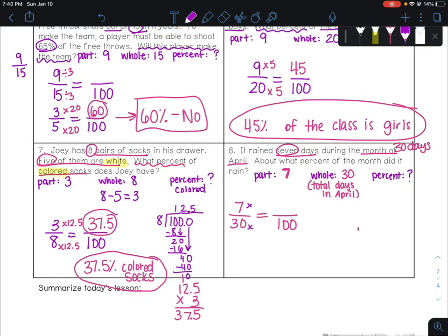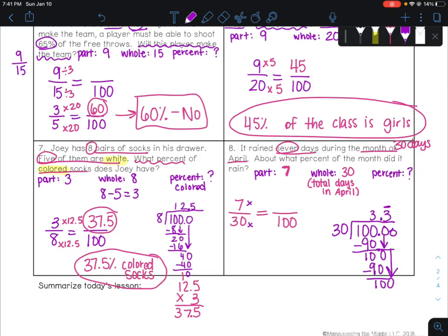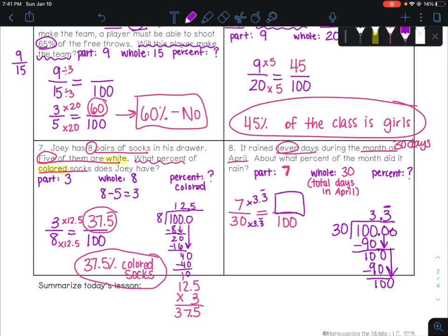And we know that we're looking for the percent out of 100. So we know that we can do 100 divided by 30. So if you do that out, you get 3.3 repeating. So 30 times 3.3 repeating. 7 times 3.3 repeating is going to give us our percent. So because it's saying about what percent, I'm just going to round 3.3 times 7. And if you do that, you're going to get 23.1 or about 23% of the month.